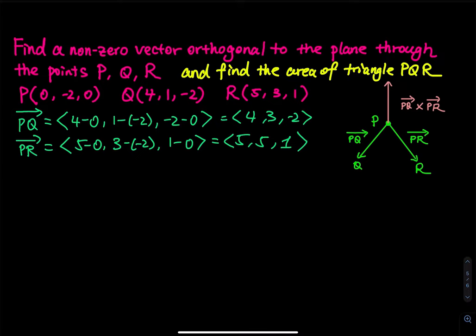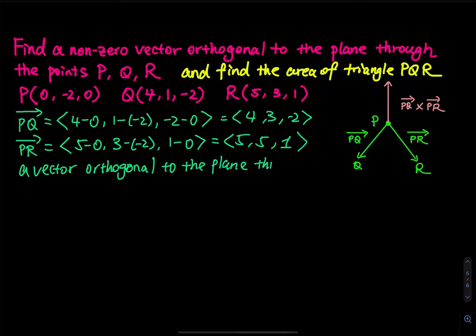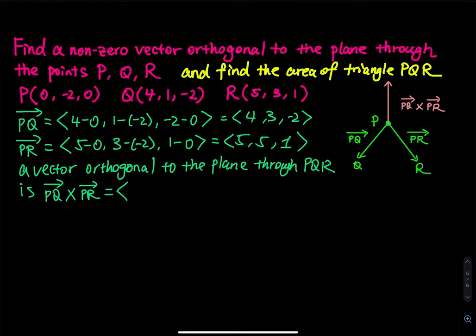So now we've got the vectors. Next we will have to find — a vector orthogonal to the plane through P, Q, R is the cross product, vector PQ cross vector PR. So which is equal to — here is my personal way to do it. I will just write the 6 numbers out: 4, 3, negative 2, and then 5, 5, 1.